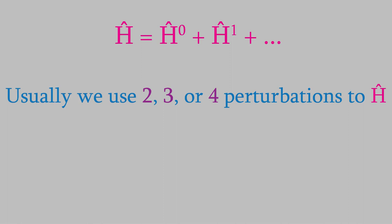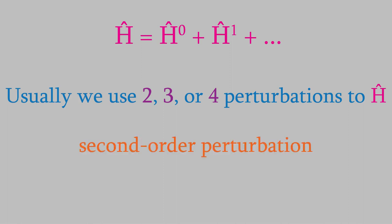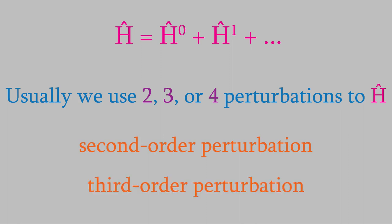Studies using up to 13 perturbations to the Hamiltonian have been published, but it's actually very rare to use more than five because the calculations become very time-consuming after that. If we use two correction terms in the Hamiltonian, this process is called second-order perturbation theory. In the same way, if we use three correction terms, it's called third-order perturbation theory, and so on.